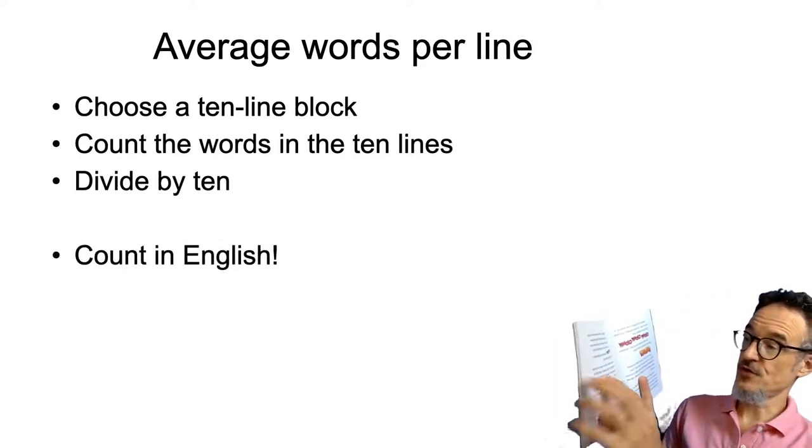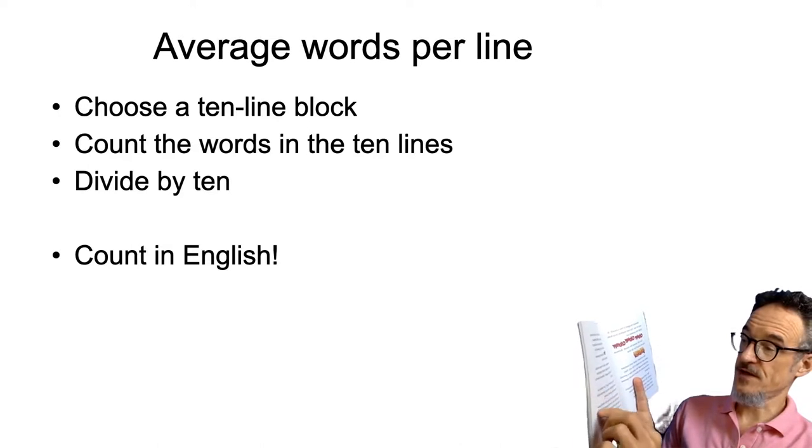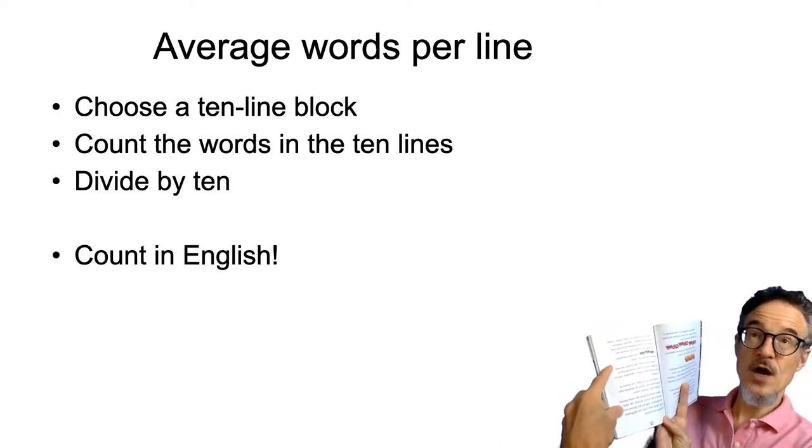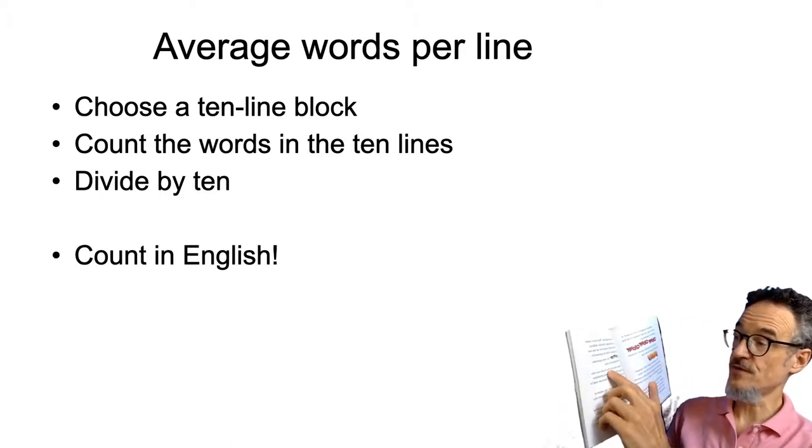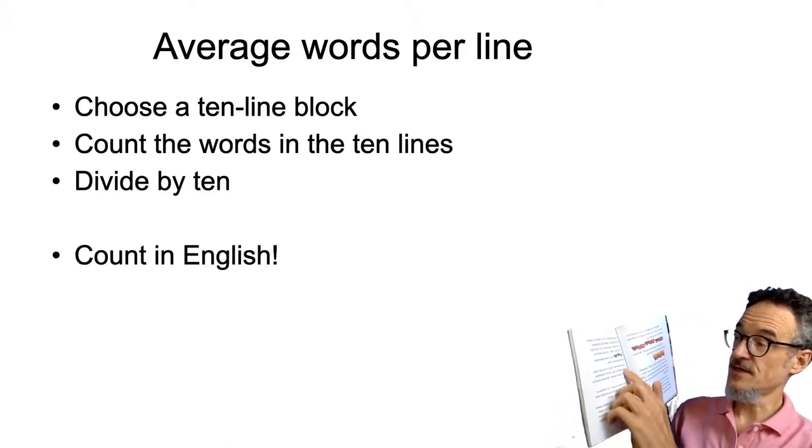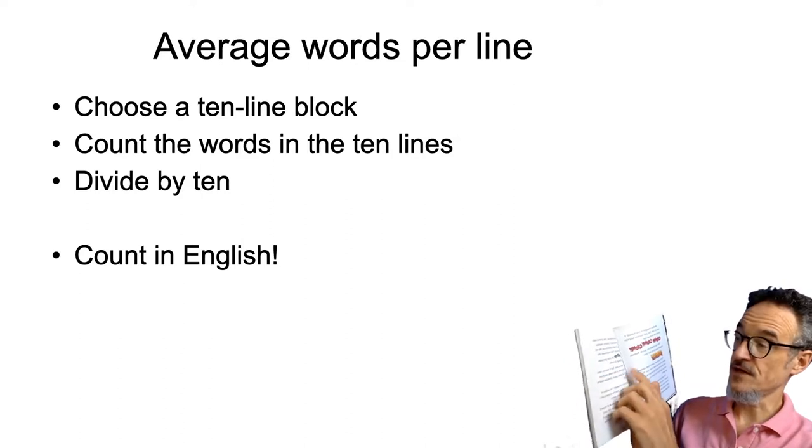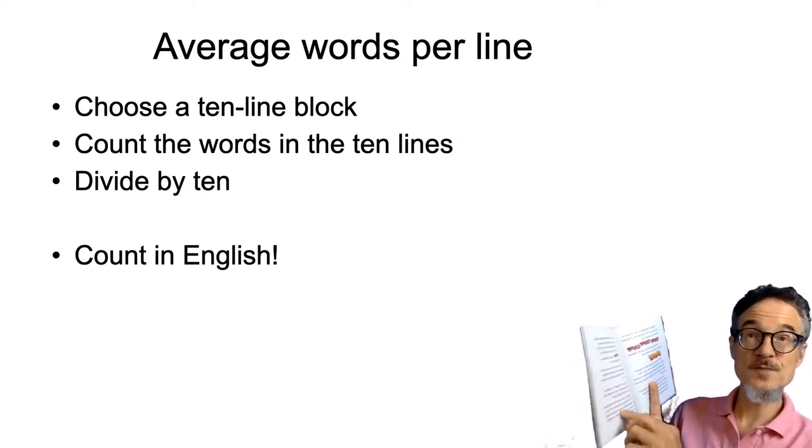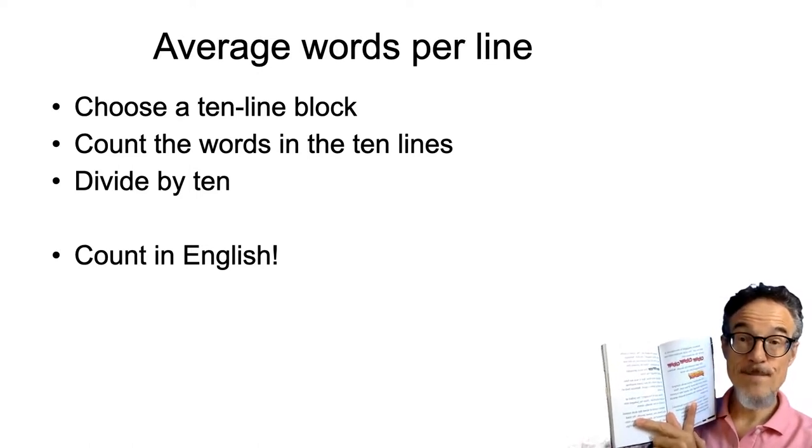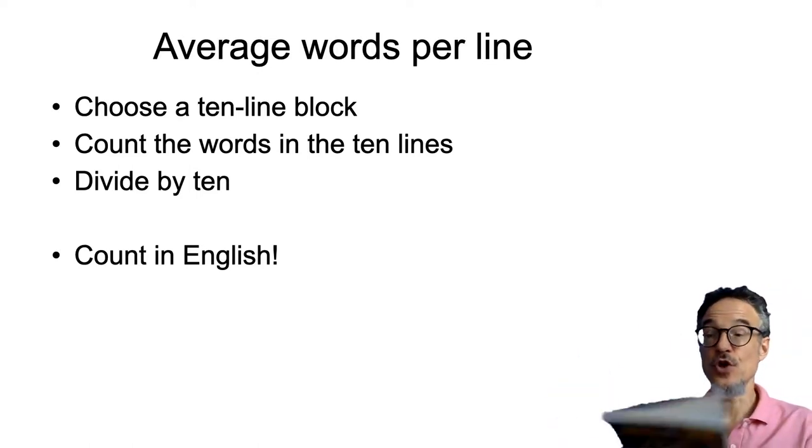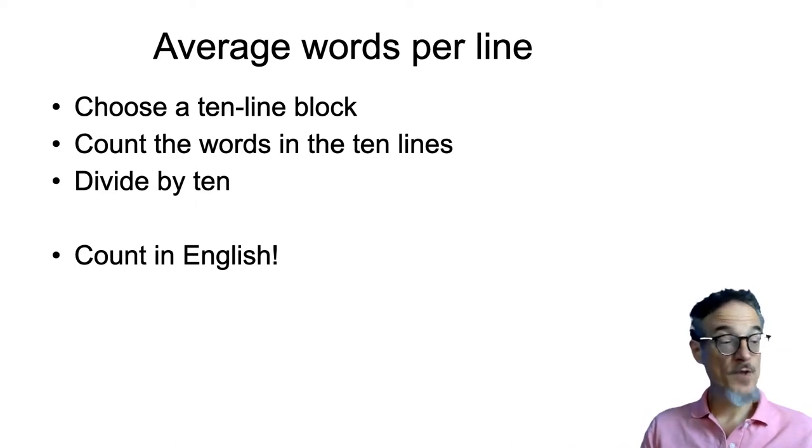So, 1, 2, 3, 4, 5, 6, 7, 8, 9, 10. So there's a 10 line block. And we can count the number of words in this block. 1, 2, 3, 4, 5, 6, 7, 8, 9, 10, 11, 12, 13, 14, 15, 16. So just count the number of words. And then we can divide by 10. And that gives us the average words per line.